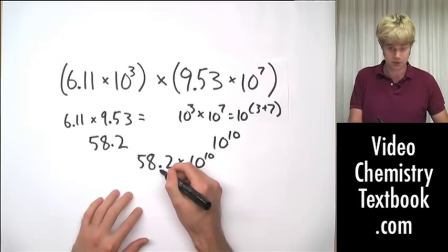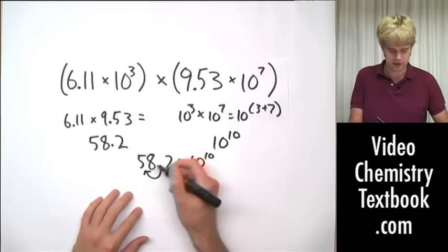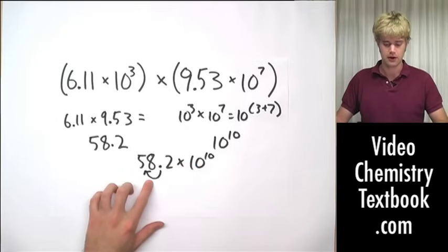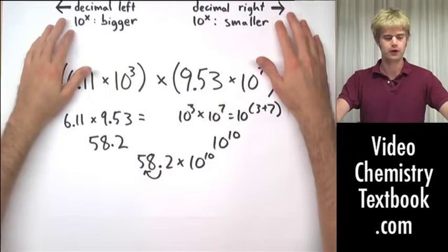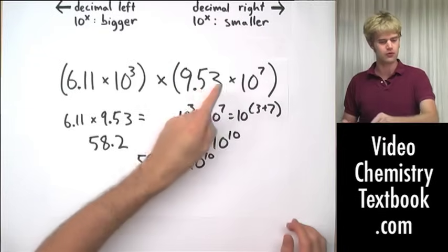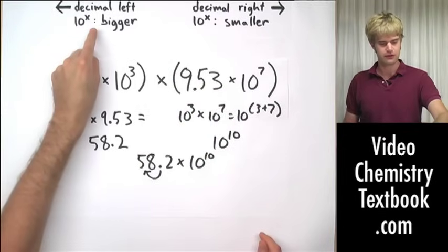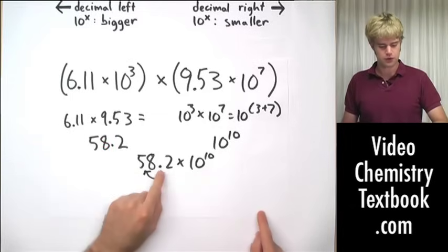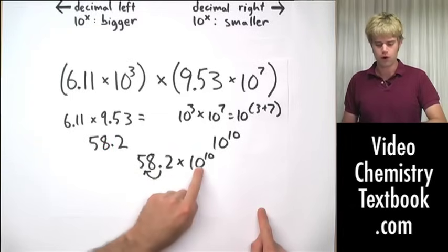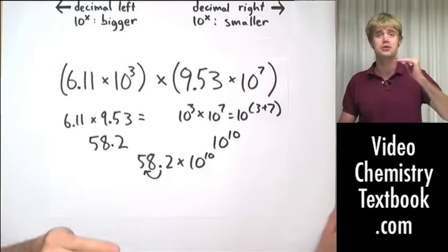So what I'm going to want to do is take this decimal place and move it over to the left one space. Now think about the rules that we talked about earlier for what happens when we move a decimal place left or when we move it right. When we move it to the left, the power of 10 increases. So since we moved it to the left by one, we'll go from 10 to the tenth up to 10 to the eleventh.